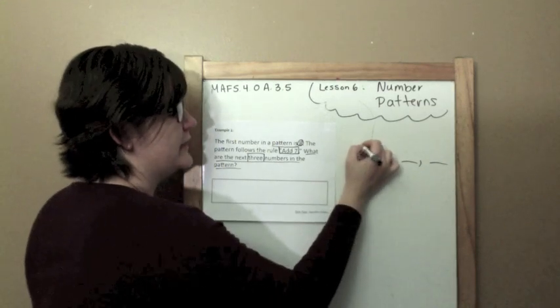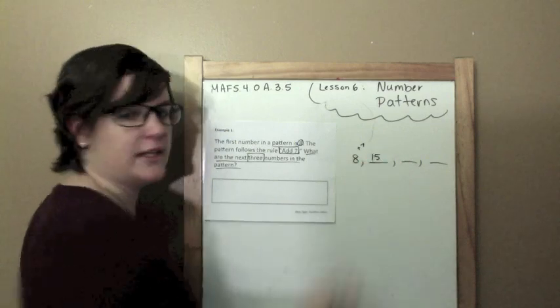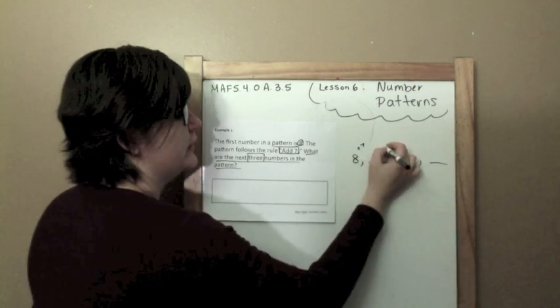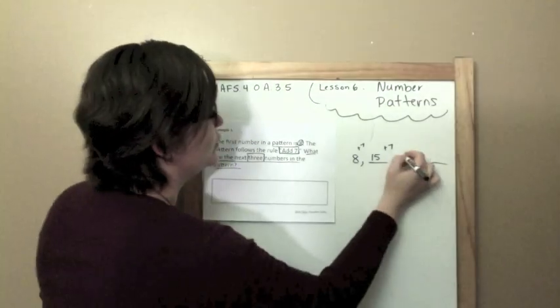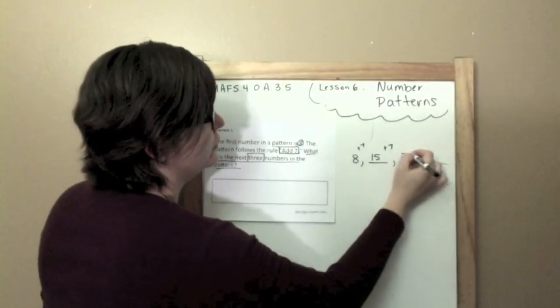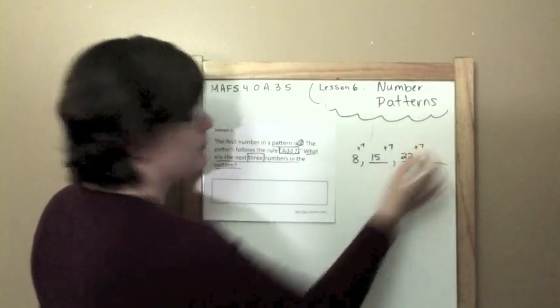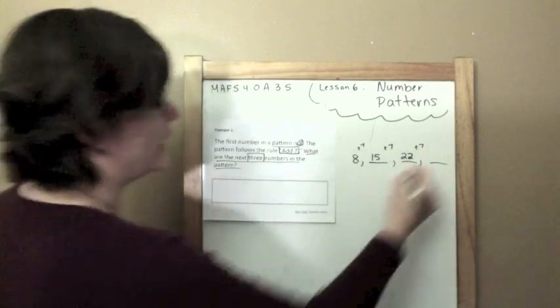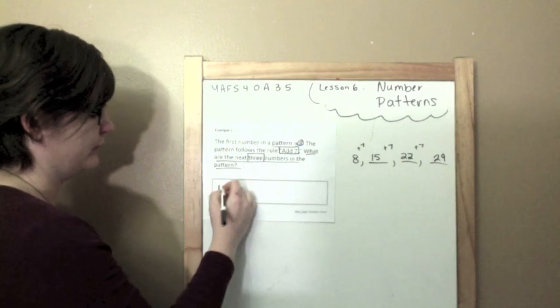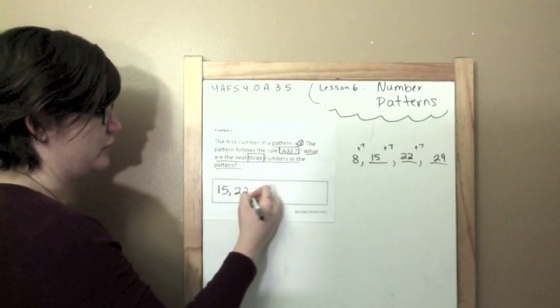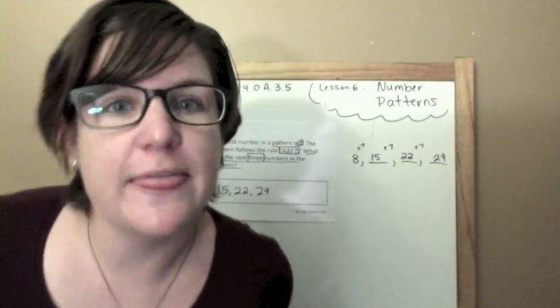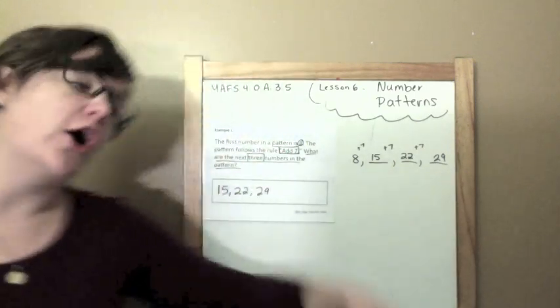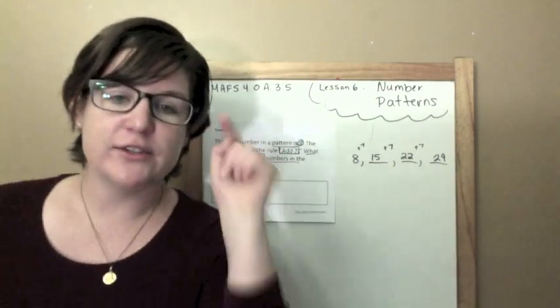So, 8 plus 7 is 15. 15 plus 7 is 22. 22 plus 7 is 29. Alright, 15, 22, 29. Don't put your work in the box. All you put into the box is your answer.